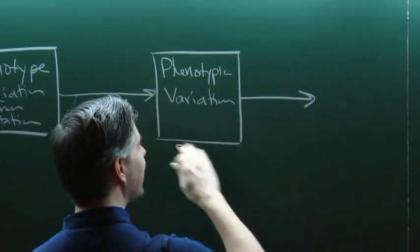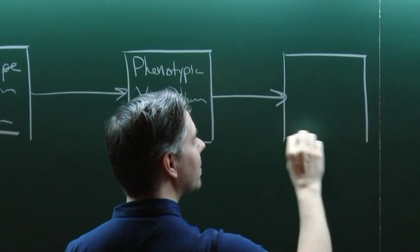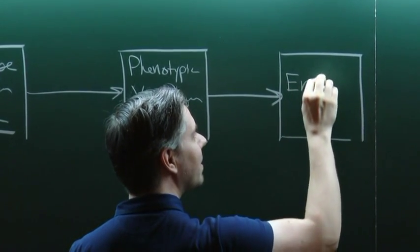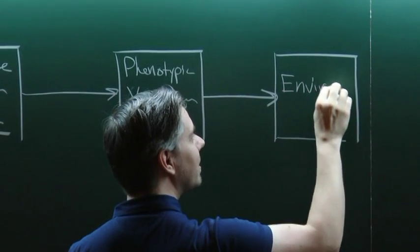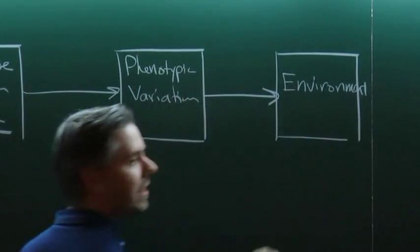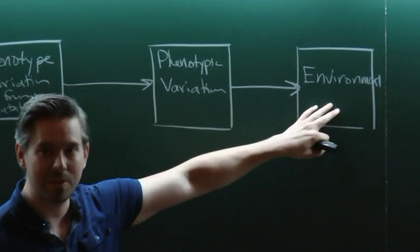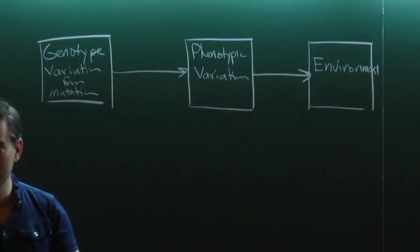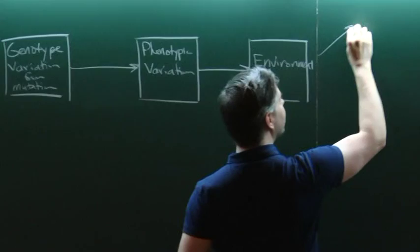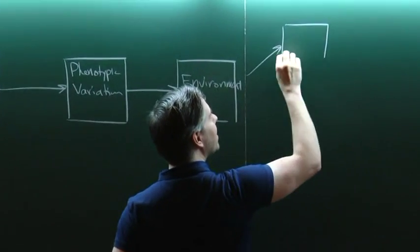The phenotypic variation — the phenotype is the way that the organism interacts with its environment. So the phenotype of the organism determines how it's going to interact with the specific environment that the cells are in. And as a result of this interaction with the environment, some cells are going to do well — they're going to get amplified in the population.